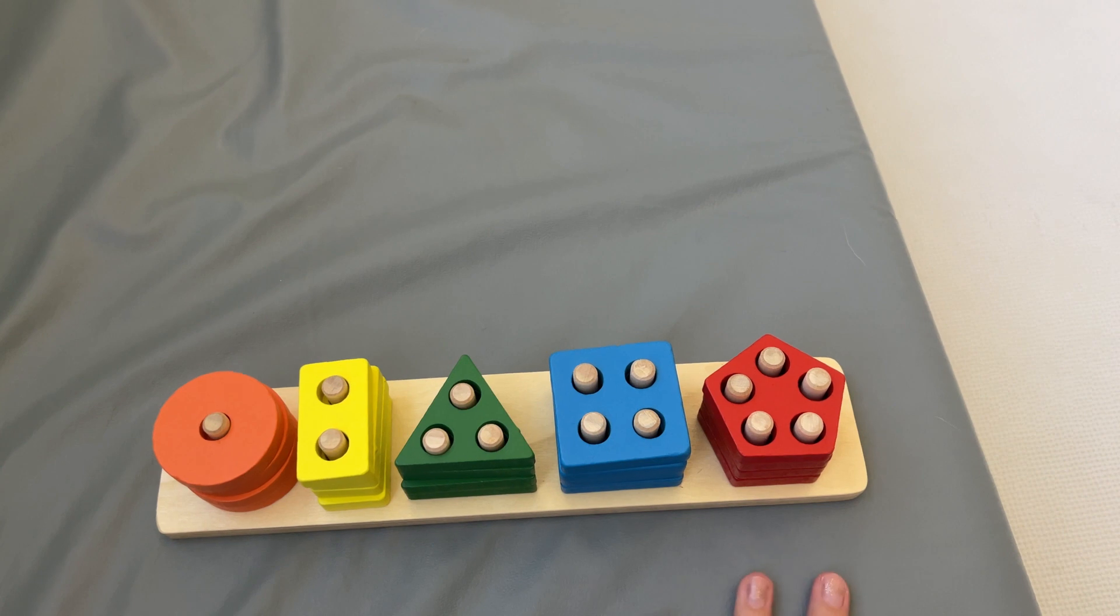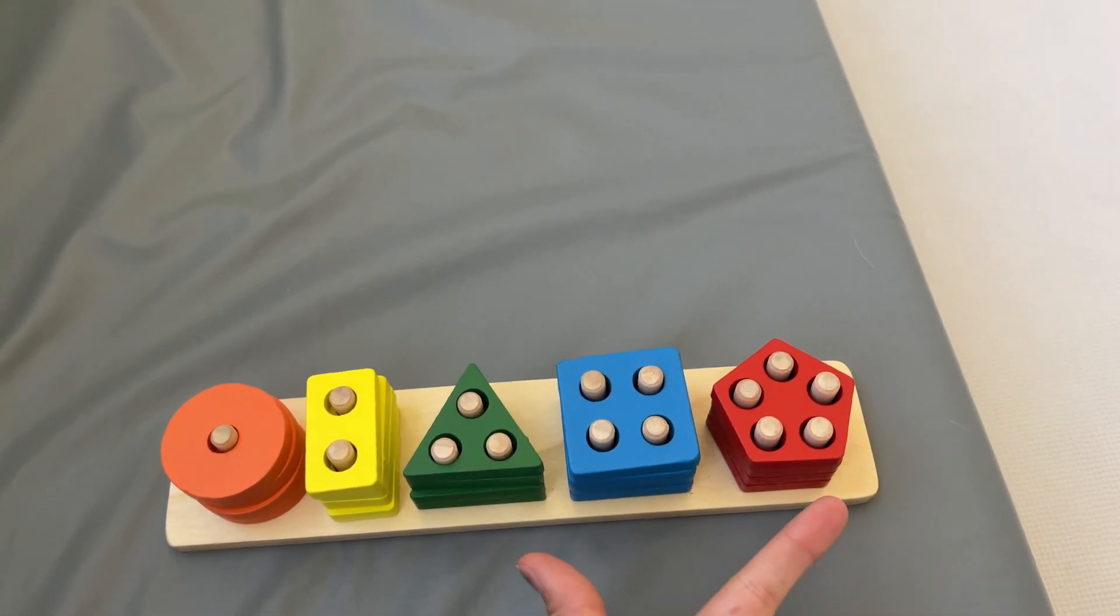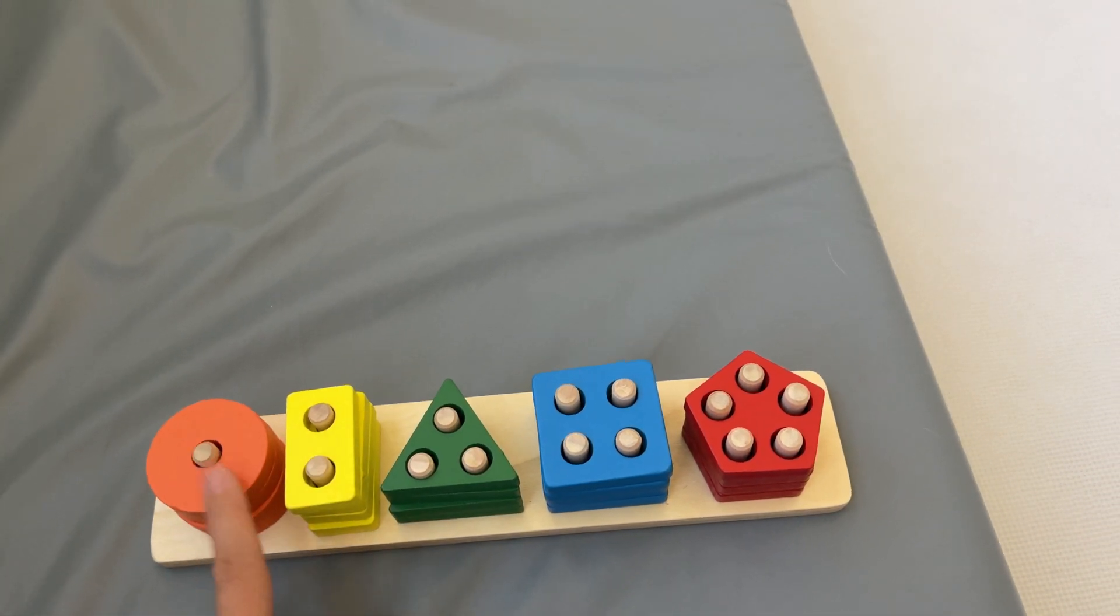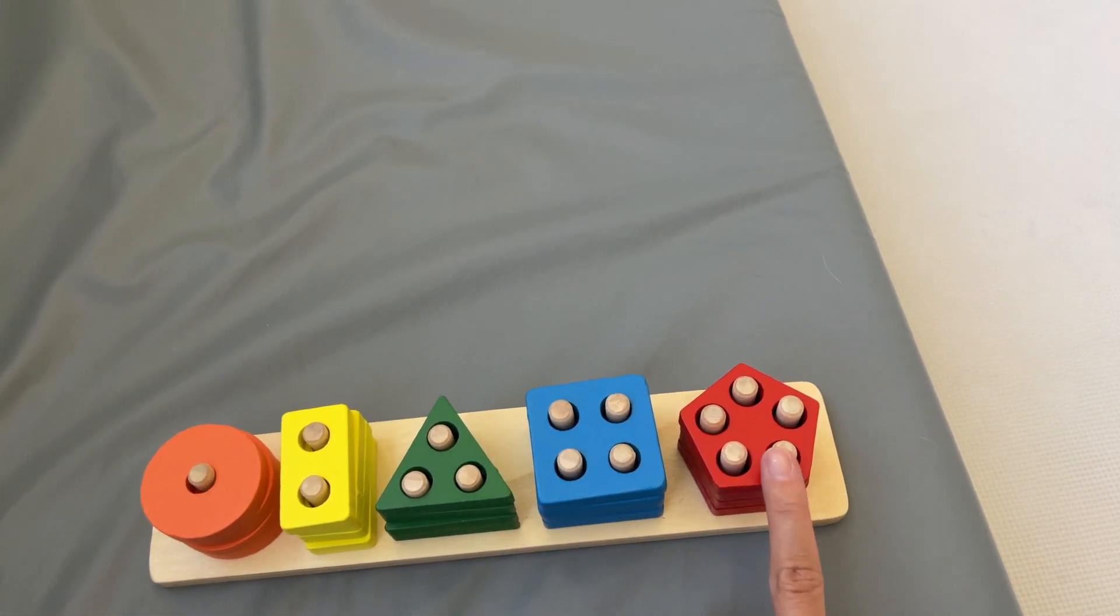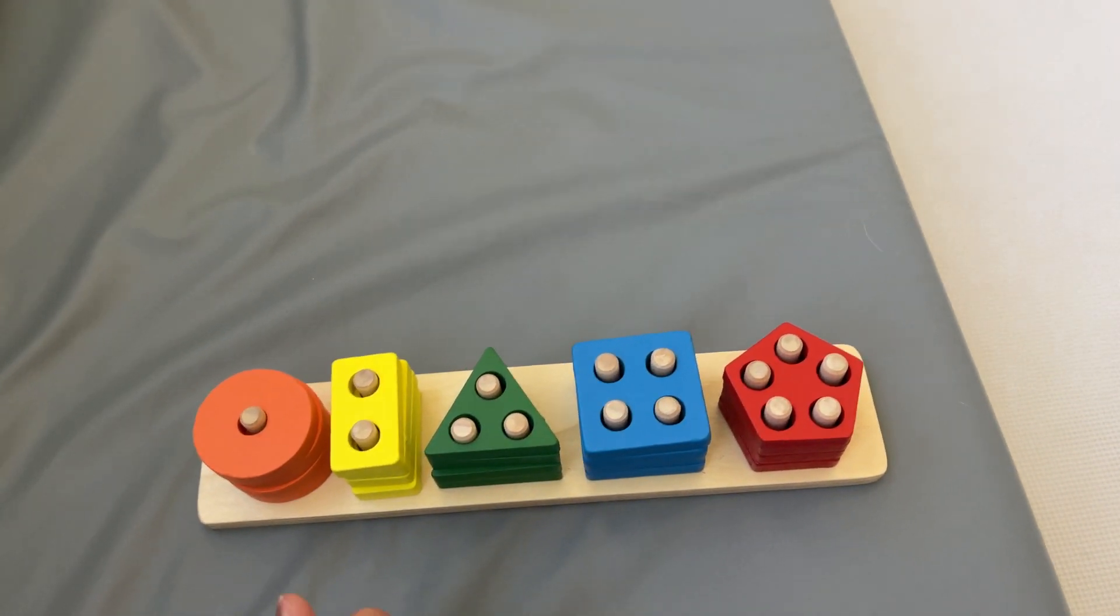So that's really good for motor skills, but it also helps with the shapes and colors and numbers. As you can see right here, it has the numbers one through five. So we always play—I ask her like, what number is this or this?